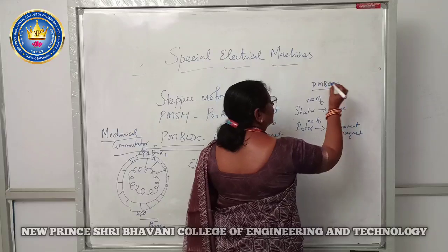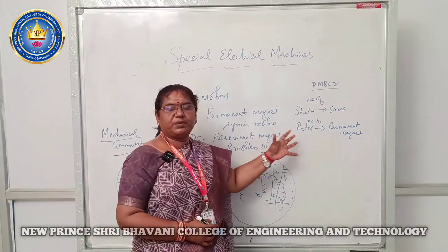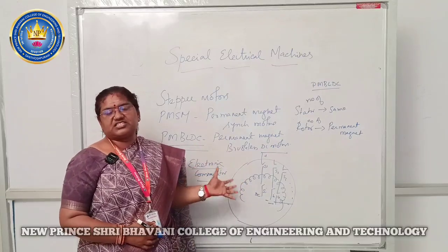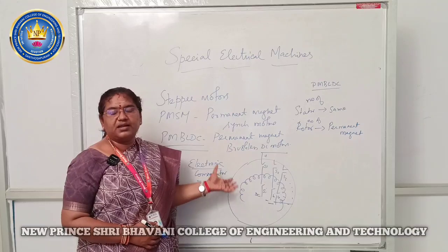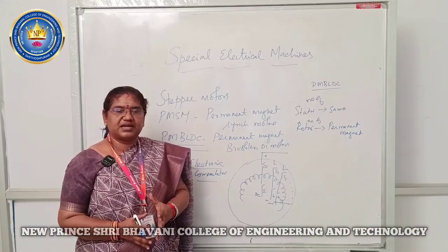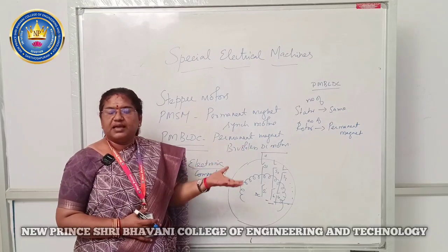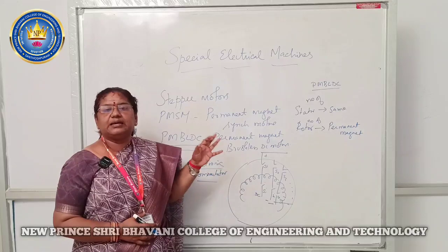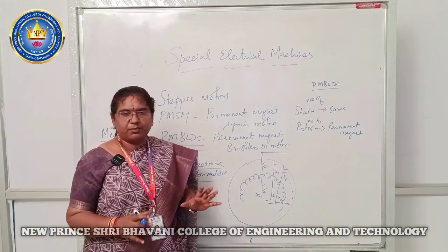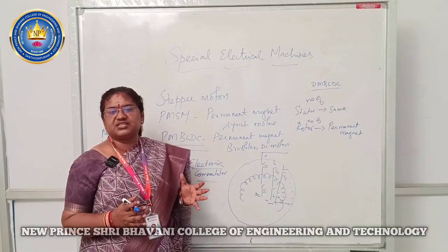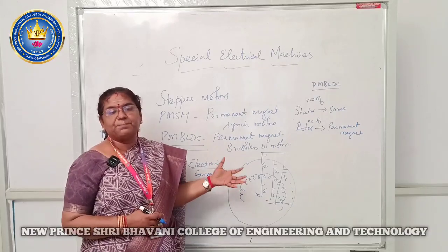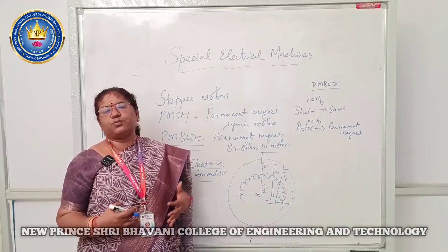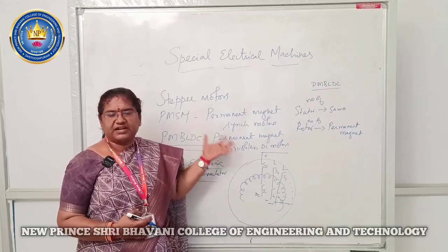In the PMBL DC motor, whenever excitation is applied, a torque is created in the air gap between the stator and rotor, causing the machine to run. Comparing PMBL DC motors to conventional DC motors: the brushless design uses electronic commutators to avoid brushes, which eliminates spark formation, improves efficiency, and makes the motor maintenance-free. The efficiency of permanent magnet brushless DC motors is better than that of conventional DC motors.